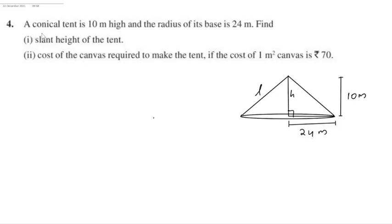Hello students, this is question number 4 of exercise 13.3. A conical tent is 10 meters high and the radius of its base is 24 meters. Find the slant height of the tent and the cost of the canvas required to make the tent, if the cost of 1 meter square canvas is rupees 70.